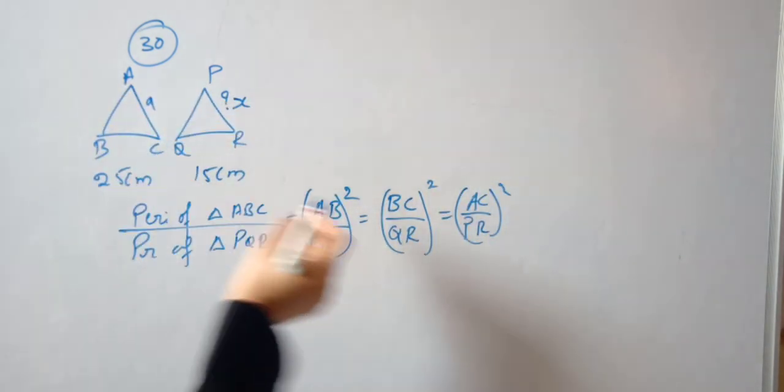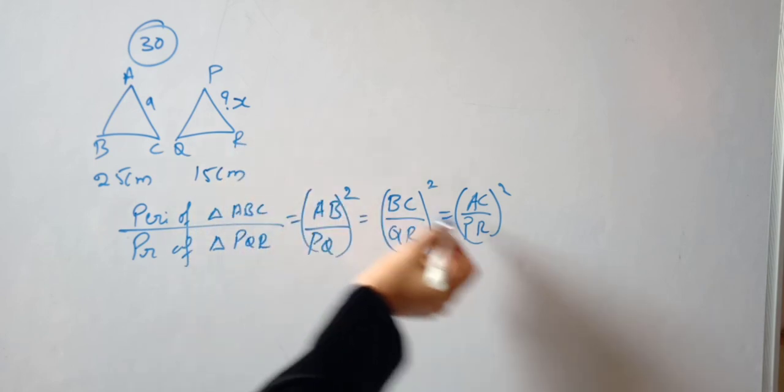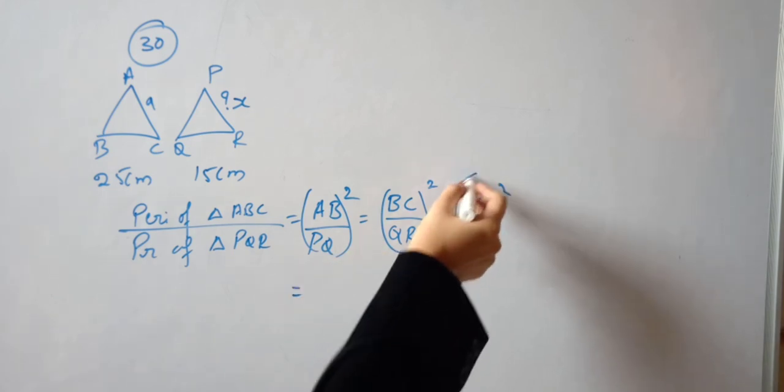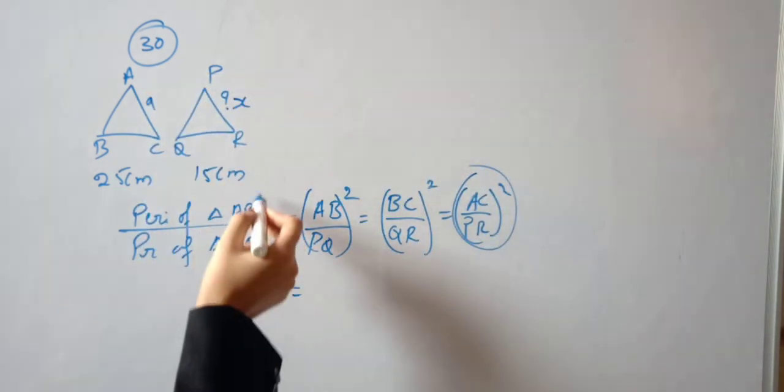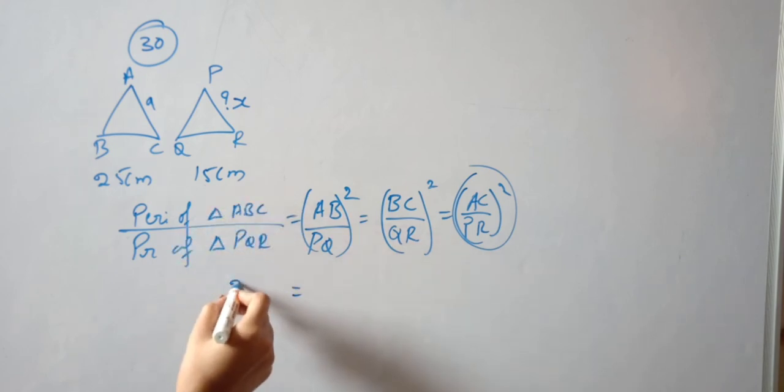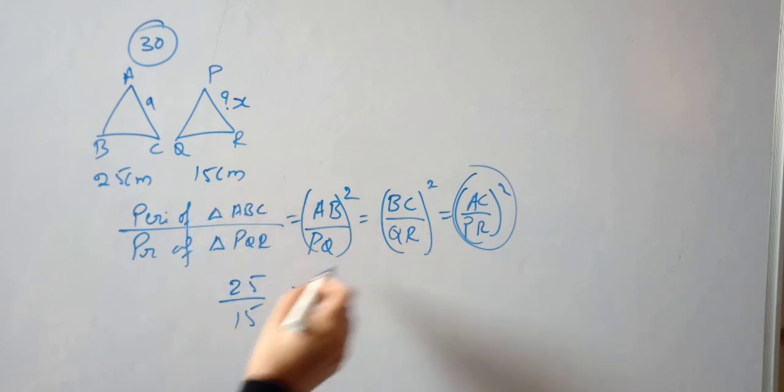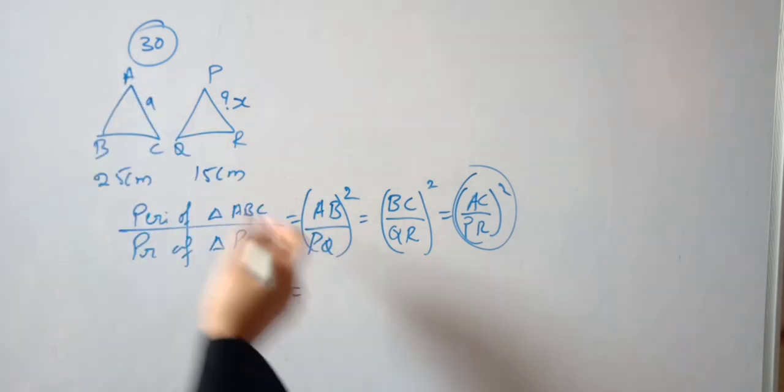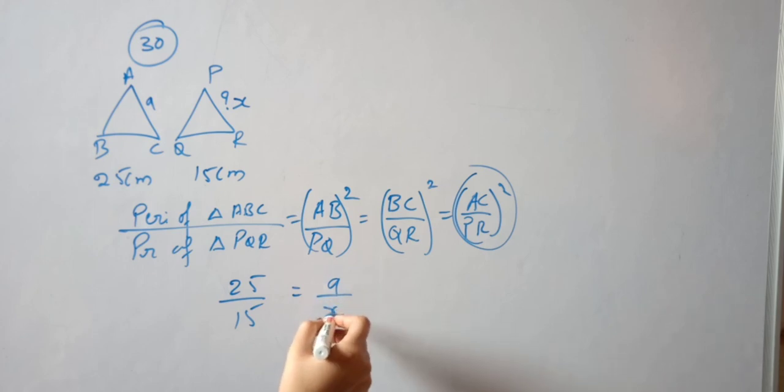So right now we will use the perimeters. The perimeter of triangle ABC is 25 and the perimeter of triangle PQR is 15, which equals AC by PR. So the perimeter of triangle ABC, 25, by 15 equals 9 by X, which is AC by PR, and this is the whole square.